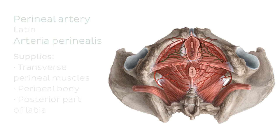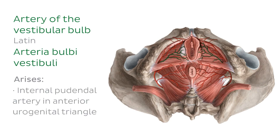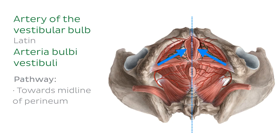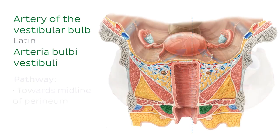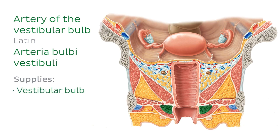Moving on to the artery of the vestibular bulb: once the internal pudendal artery enters the anterior urogenital triangle, it gives off the artery of the vestibular bulb, which travels medially towards the midline of the perineum. In this coronal section of the female pelvis you can see the uterus, the vagina, and the vaginal vestibule. The vestibular bulbs, highlighted in green, are masses of erectile tissue equivalent to the bulb of the penis. The artery of the vestibular bulb also supplies the erectile tissue of the vagina.